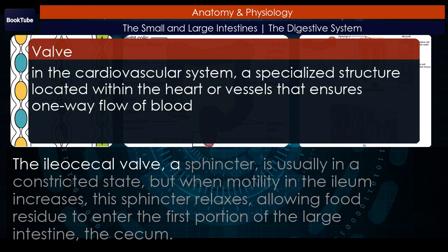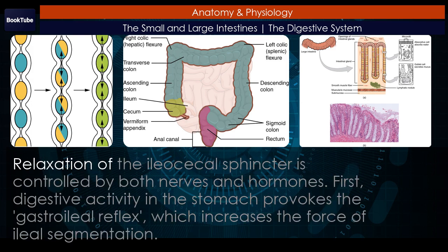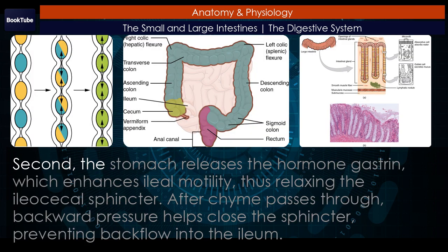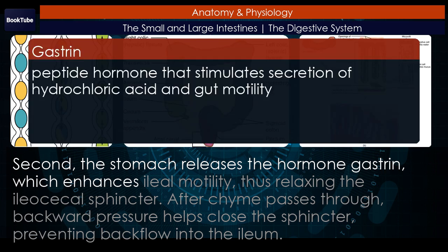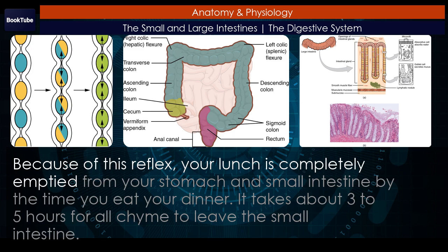The ileocecal valve — a sphincter — is usually in a constricted state, but when motility in the ileum increases, this sphincter relaxes, allowing food residue to enter the first portion of the large intestine, the cecum. Relaxation of the ileocecal sphincter is controlled by both nerves and hormones. First, digestive activity in the stomach provokes the gastroileal reflex, which increases the force of ileal segmentation. Second, the stomach releases the hormone gastrin, which enhances ileal motility, thus relaxing the ileocecal sphincter. After chyme passes through, backward pressure helps close the sphincter, preventing backflow into the ileum.